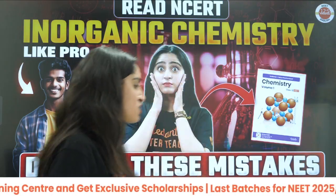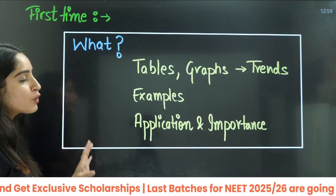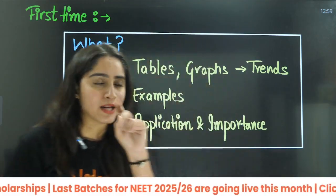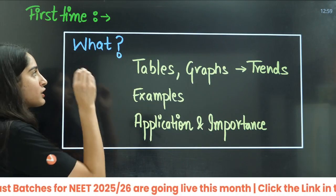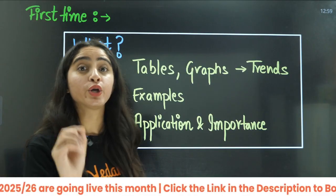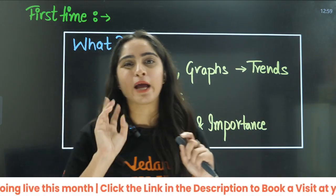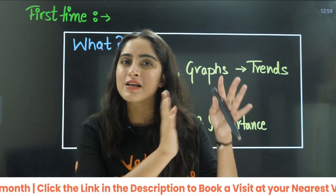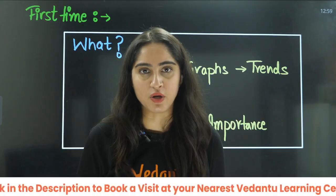Now let us see the correct way to read NCERT for the very first time — what you are going to focus on, what should you read. There are two types of things in Organic Chemistry: first is Block Chemistry, second is Conceptual Chemistry.